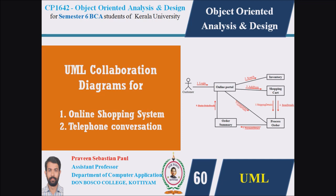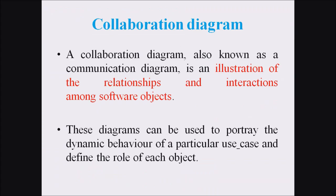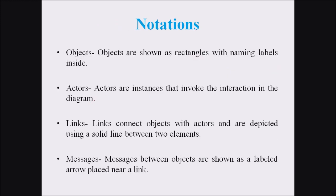In the last lecture we had discussed what is a collaboration diagram. A collaboration diagram is an interaction type of diagram, also known as a communication diagram, which is used to illustrate the relationship and interactions among the different software objects as well as actors. These diagrams can be used to portray the dynamic behavior of a particular use case and define the role of each object.